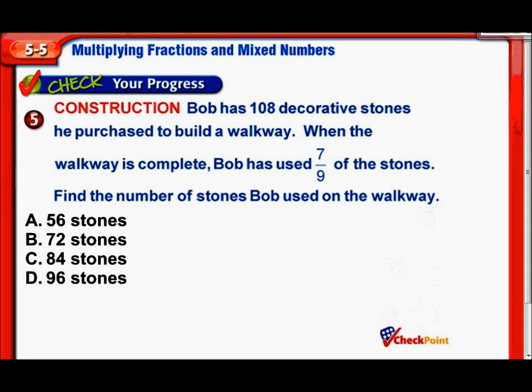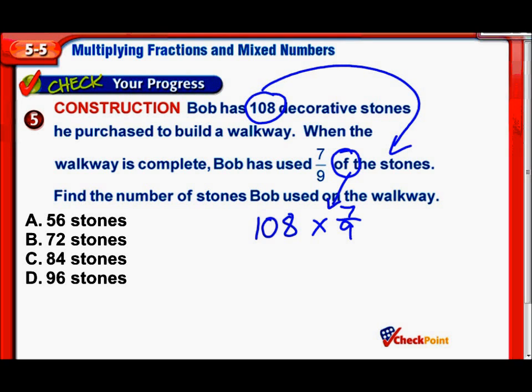Now, we have our little word problem here. Bob has 108 decorative stones he purchased to build a walkway. When the walkway is complete, Bob has used 7/9 of the stones. A little more than half. So, find the number of stones Bob used. Oh, okay. So, we need to do 108 times our 7/9. Because we need 7/9 of... See that 'of' there? I think I mentioned this in another video recently. Of always means to multiply. So, we need 7/9 of the stones. Well, how many stones were there? Right here, 108. There are 108 stones. So, we need to do 108 times 7/9.